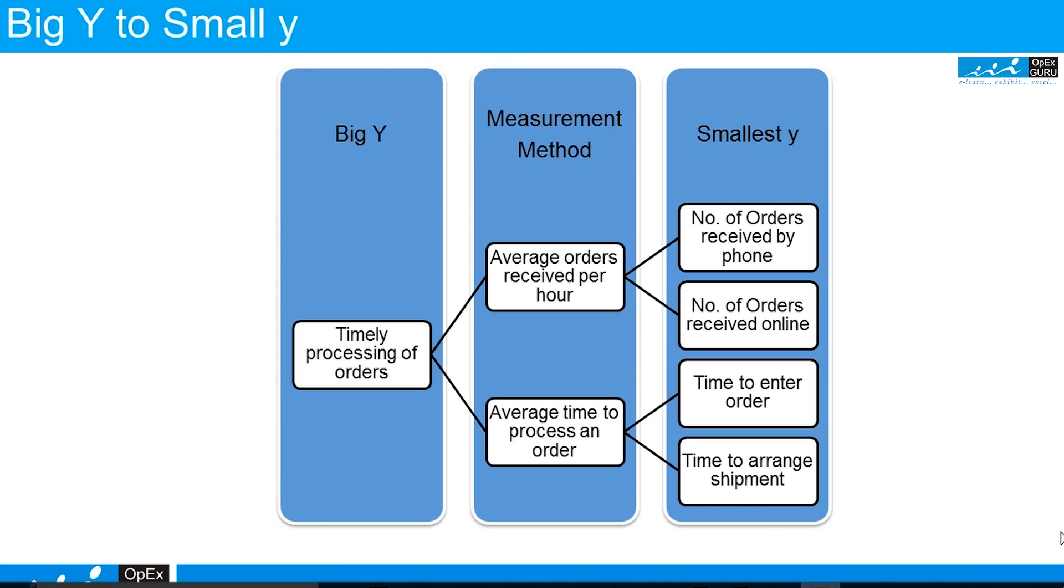We can take the project at a Small Y level in Six Sigma, so we have to define our project scope according to this. This is how we can understand the difference between Big Y and Small Y.